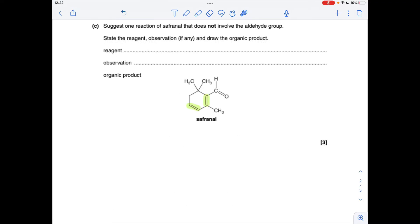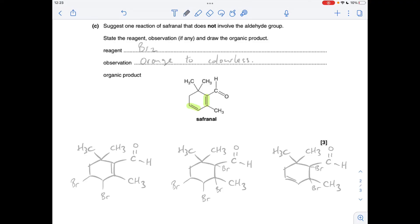Moving on to part C now, so reaction of safranal that doesn't involve the aldehyde group is obviously the reaction of these carbon-carbon double bonds. The obvious reaction to go for because we need an observation is the reaction with bromine. So the reagent is bromine, the observation is orange to colourless because the bromine reacts and is decolourised.